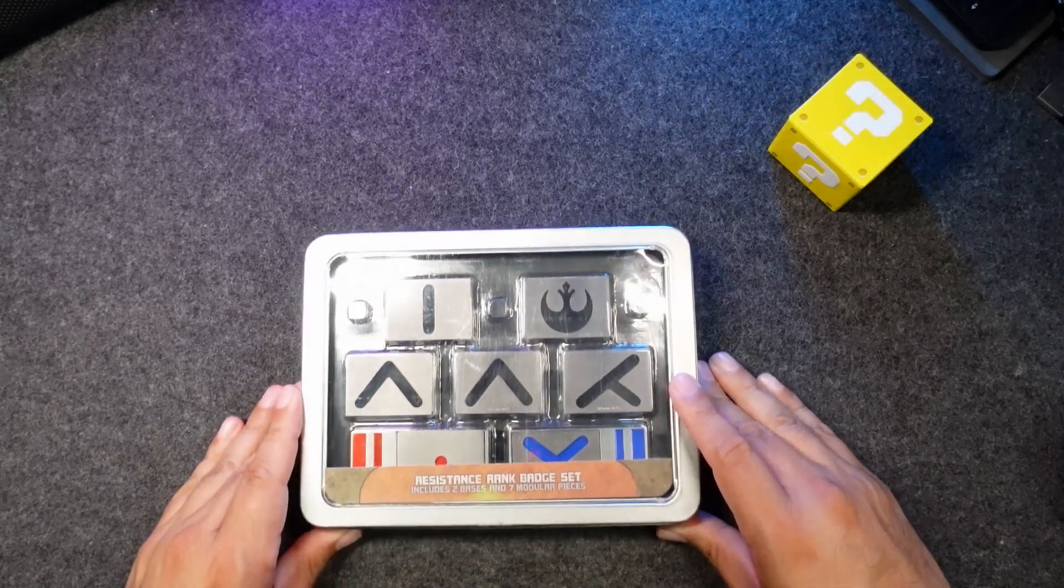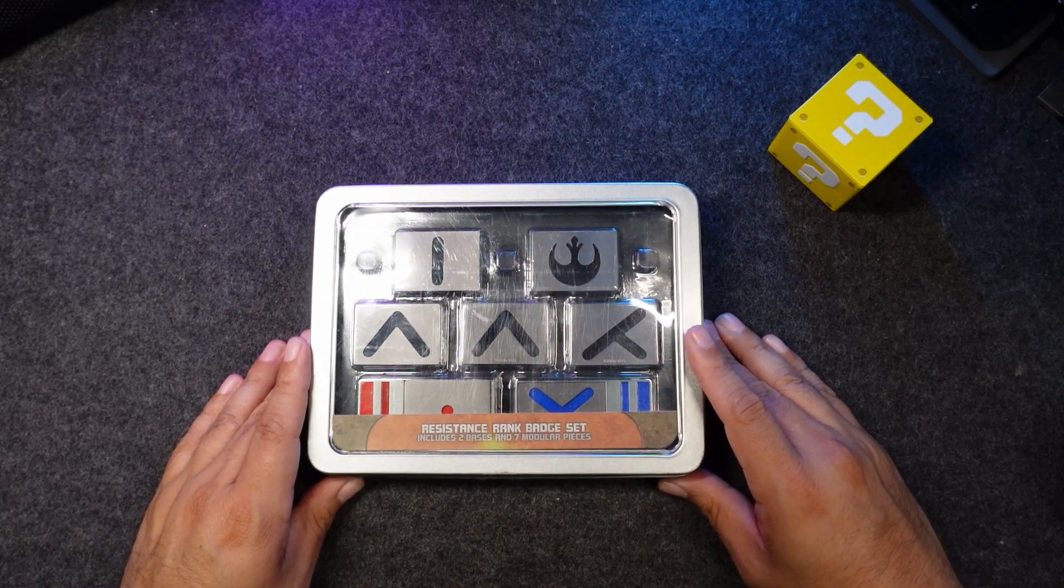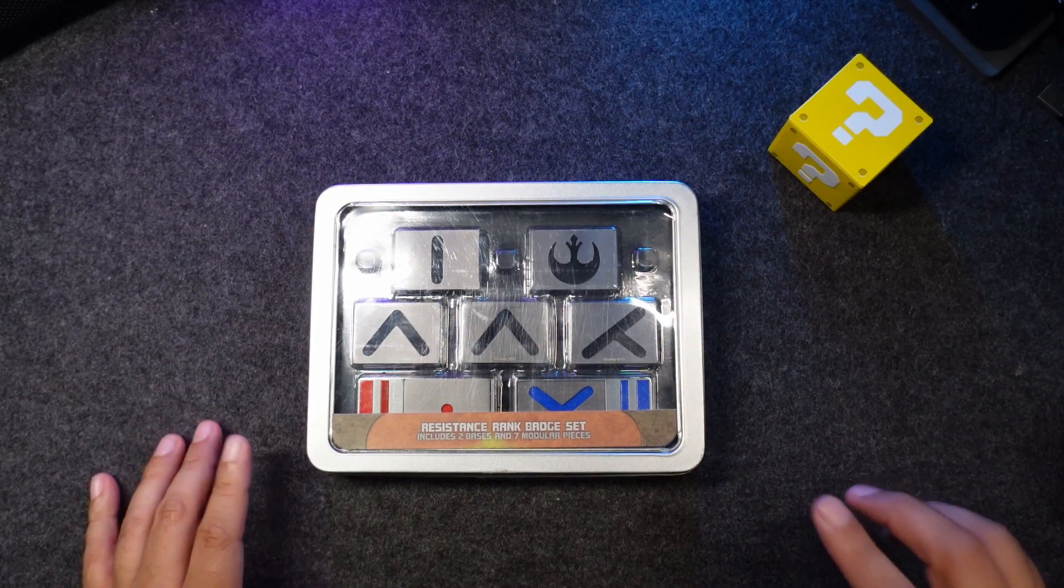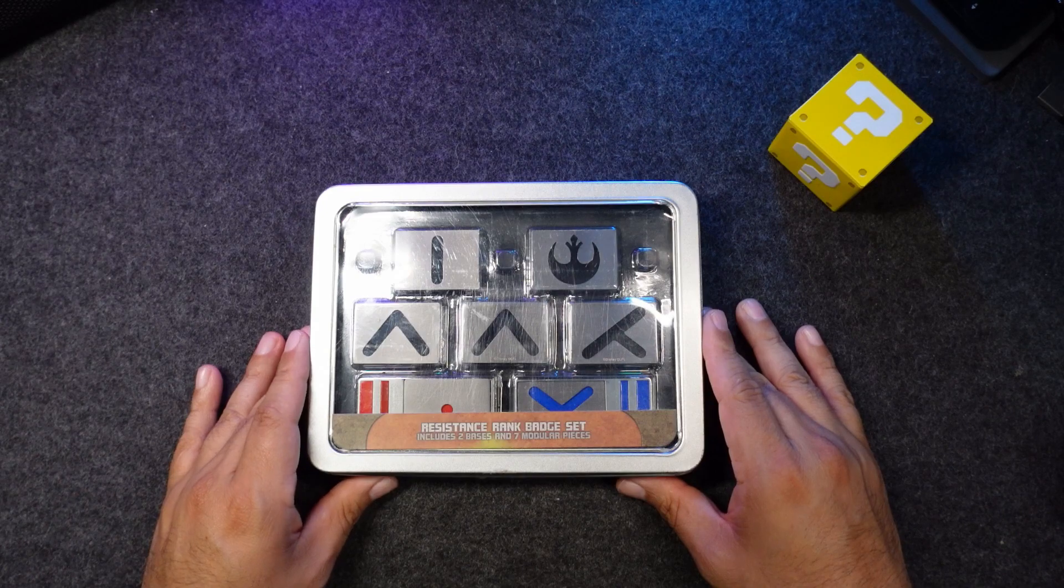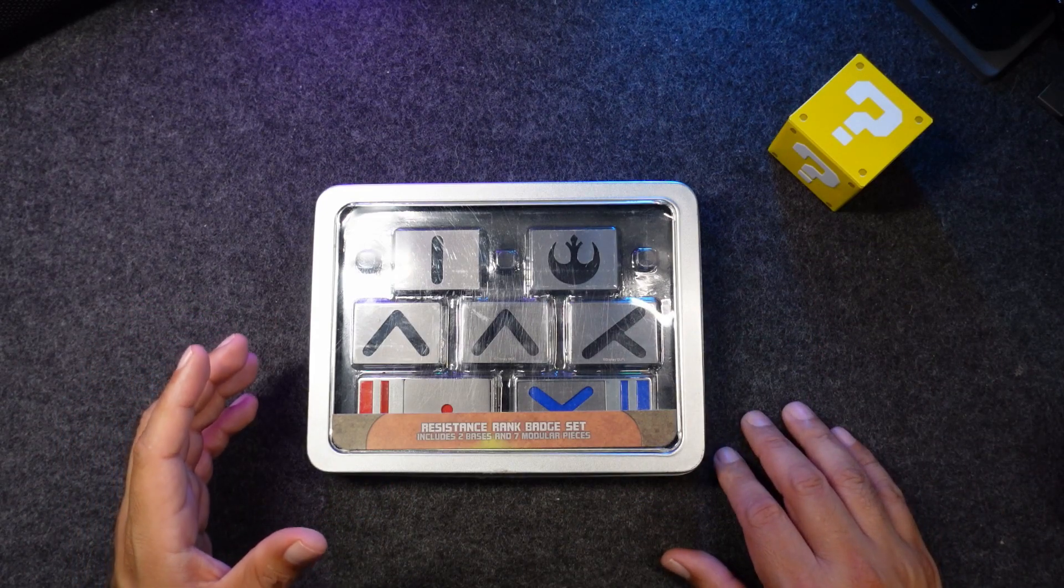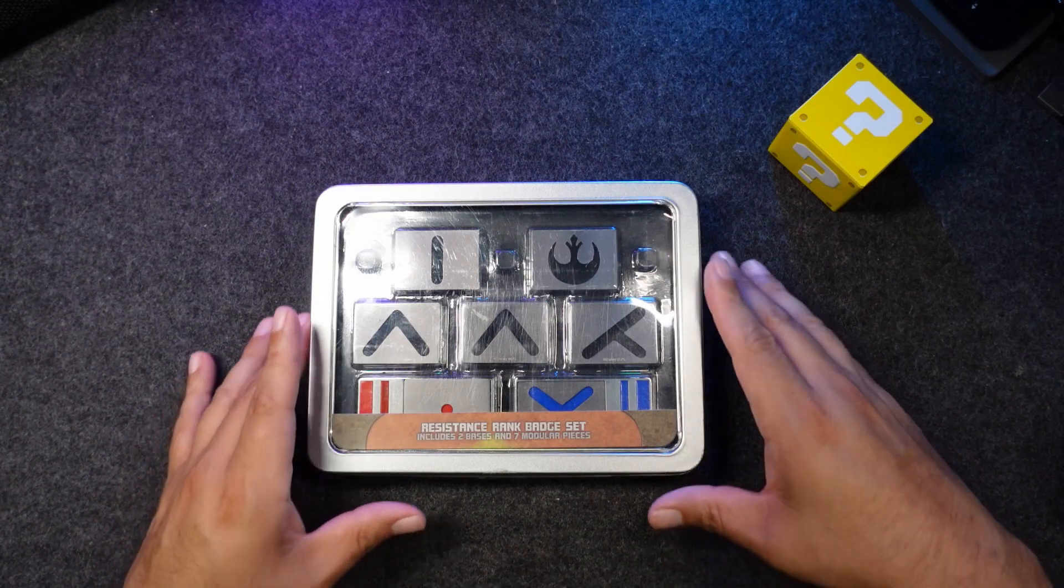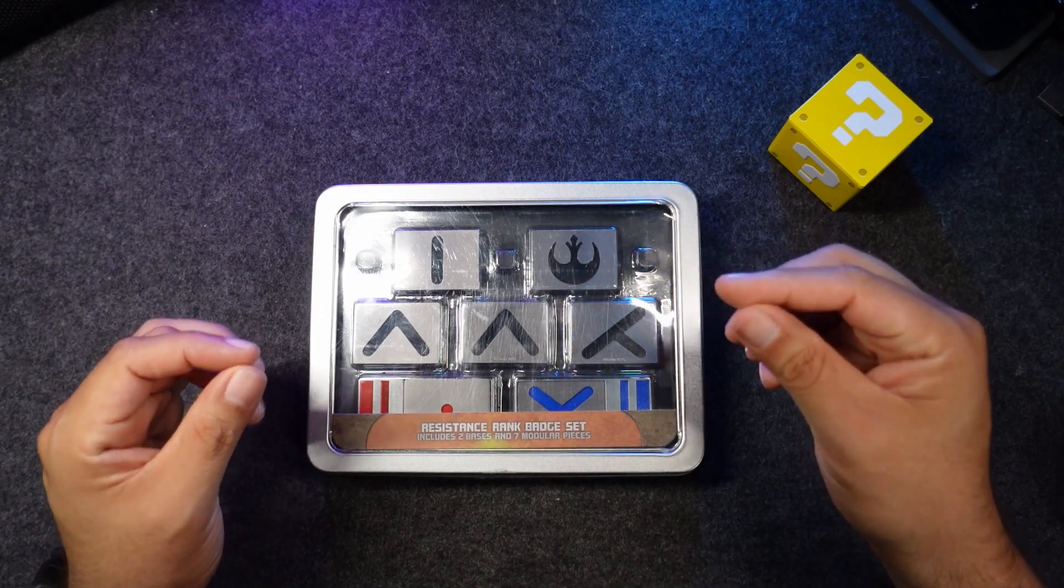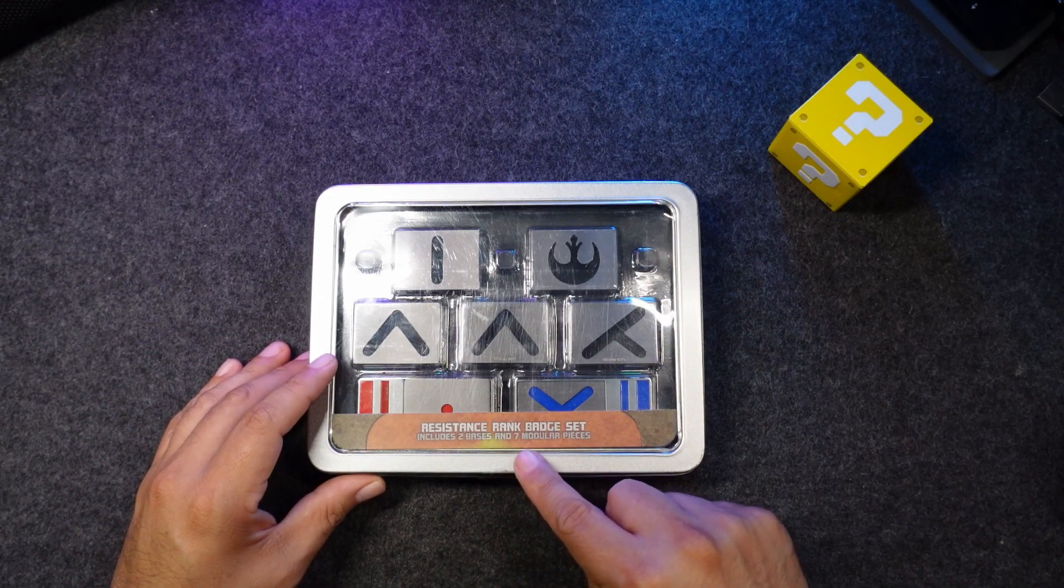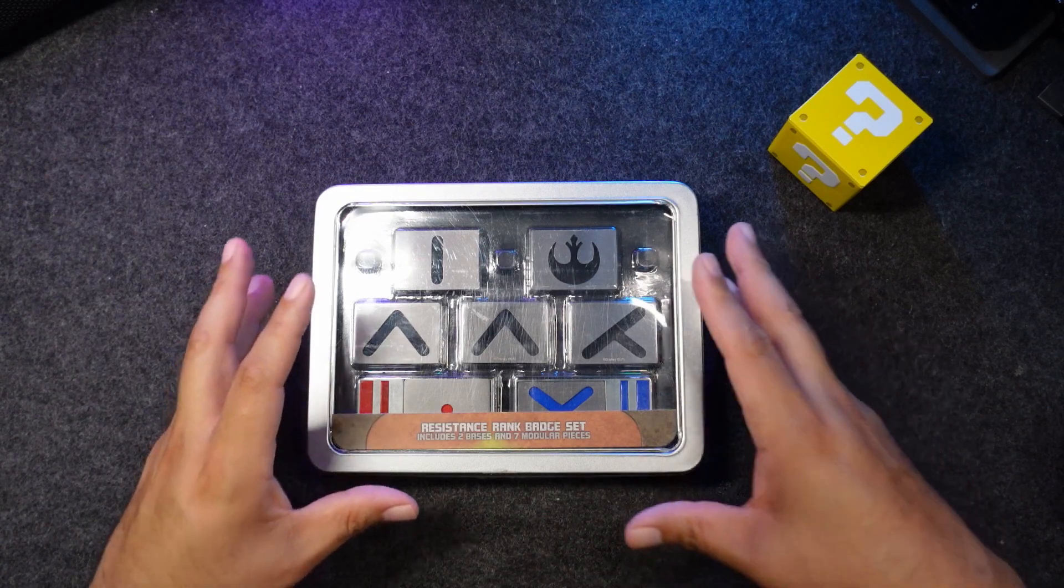Hello guys, Jolester here. Welcome back to the channel. Welcome back to another relaxed video with Jolester. And in today's episode, I have a very special item here for you guys. I love this item. This is the Resistance Rank Badge Set from Star Wars. Recently, I went to a trip to Disneyland and I purchased this and I thought it would be nice to unbox it and just get some tingles out of these badges. This includes two bases and seven modular pieces. So we're going to open this up.